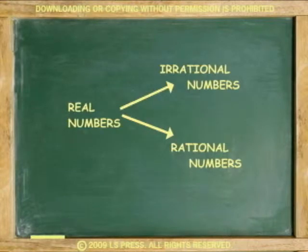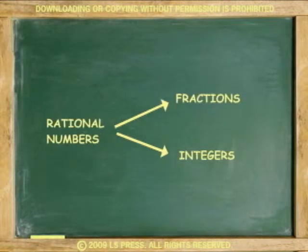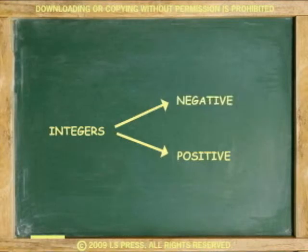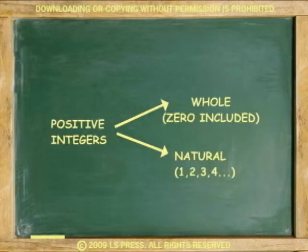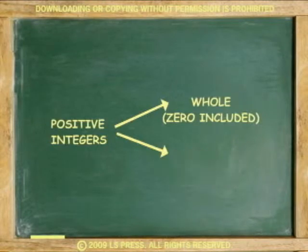The following flow chart will help you understand this better. Real numbers are divided into irrational numbers and rational numbers. Rational numbers, in turn, are split further into fractions and integers, while integers can be negative and positive. Beyond this, positive numbers are called whole if they include zero, and natural if they do not.